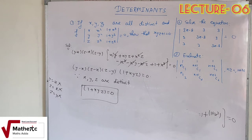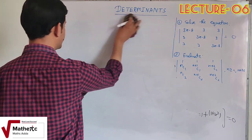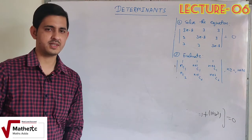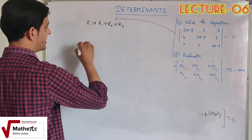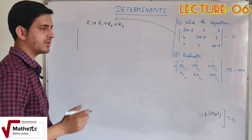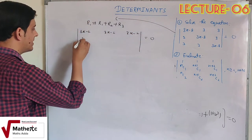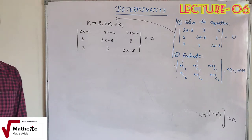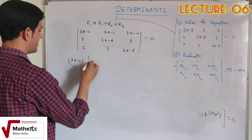Second question में equation को solve करना है — determinant को expand करके x की value find out करनी है। Properties लगाने से पहले: R1 = R1 + R2 + R3 apply करते हैं। जोड़ने पर: 3+3 = 6, −8+6 = −2 — so the first row becomes (3x−2, 3x−2, 3x−2). Common factor (3x−2) निकालते हैं, तो first row बन जाती है (1, 1, 1).